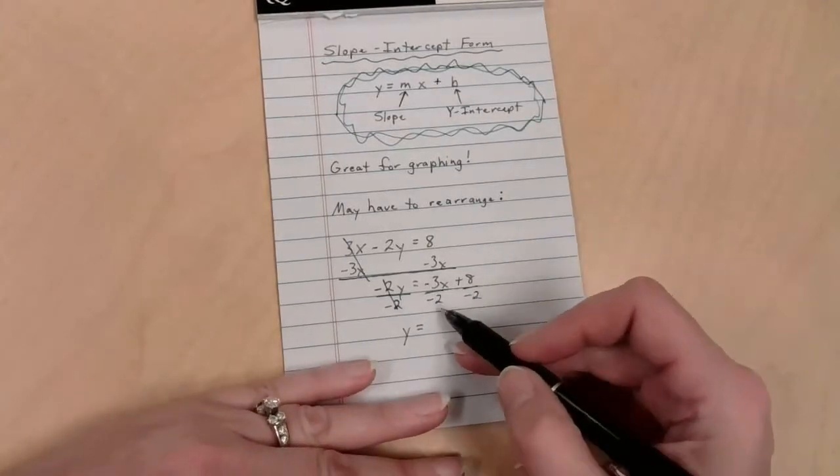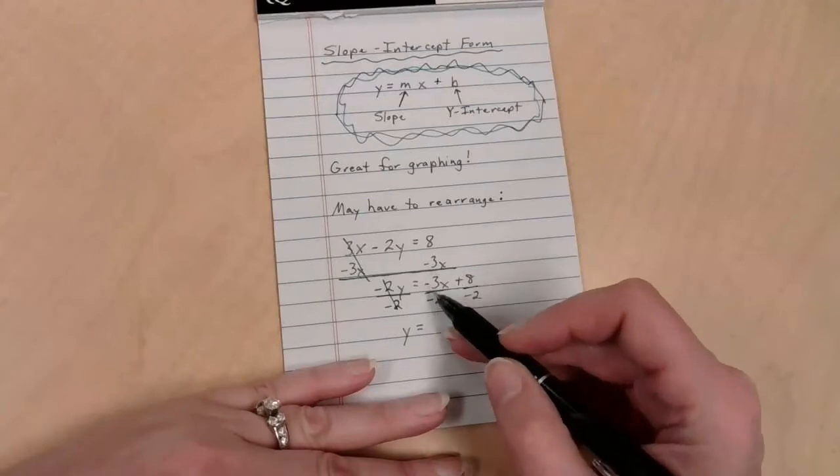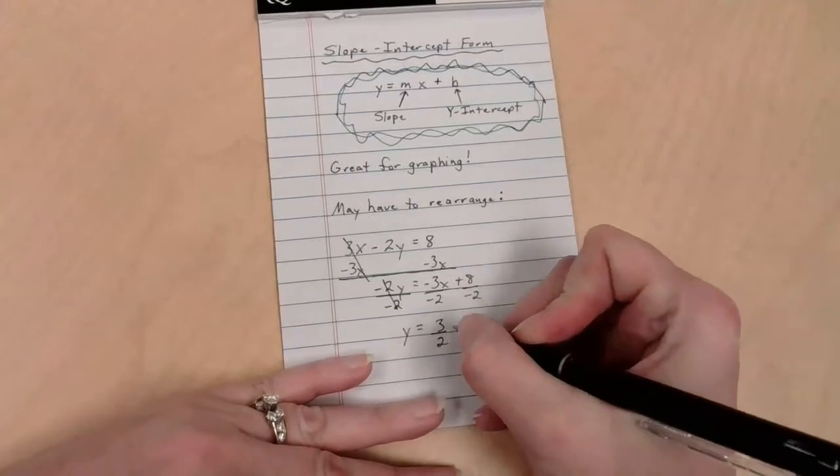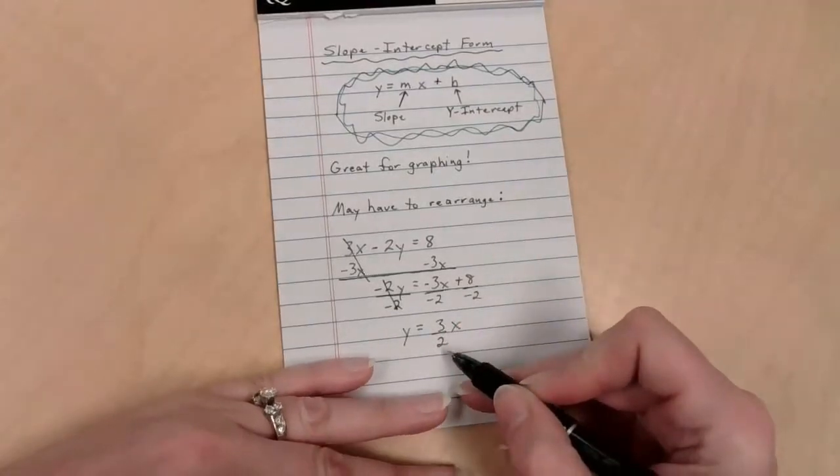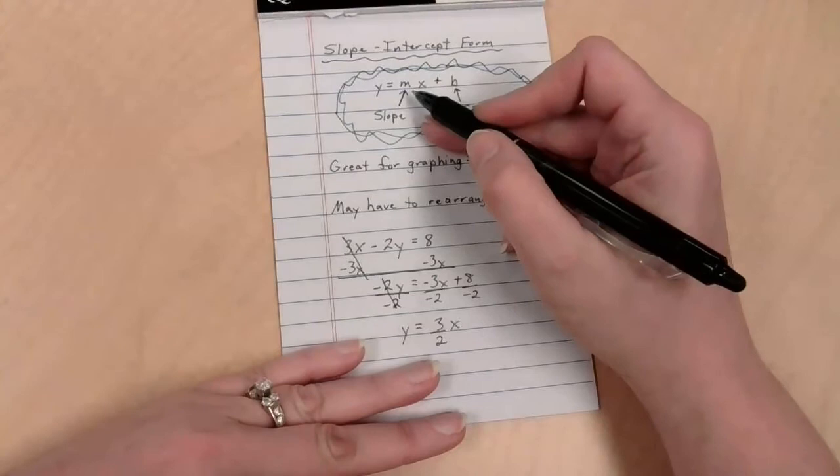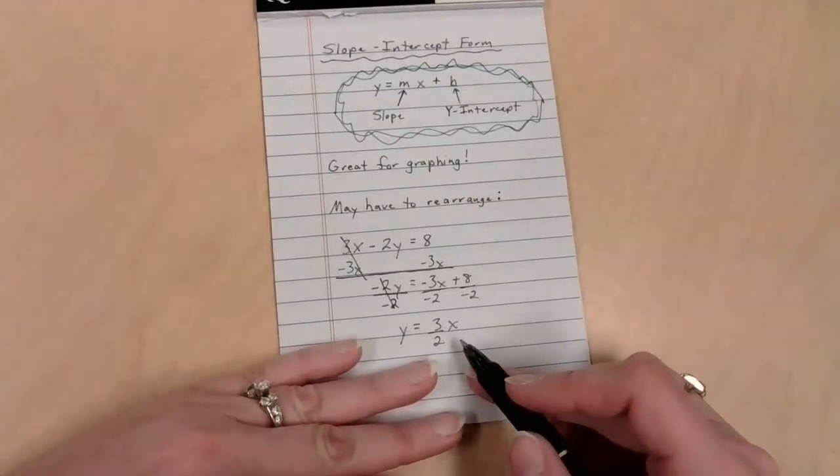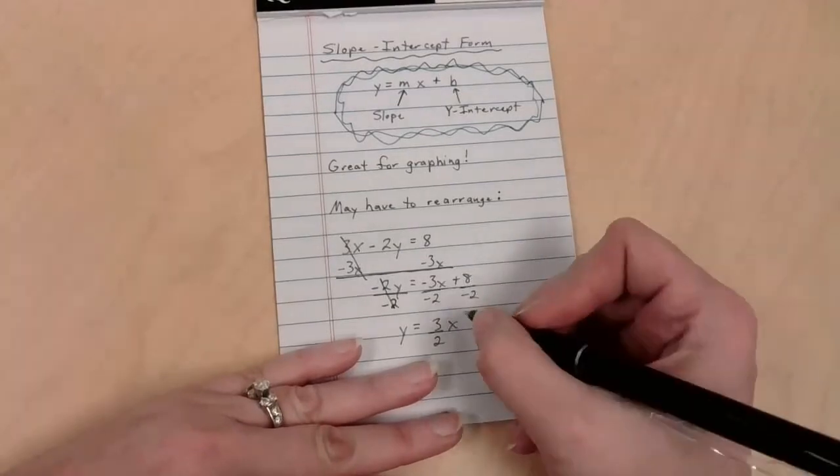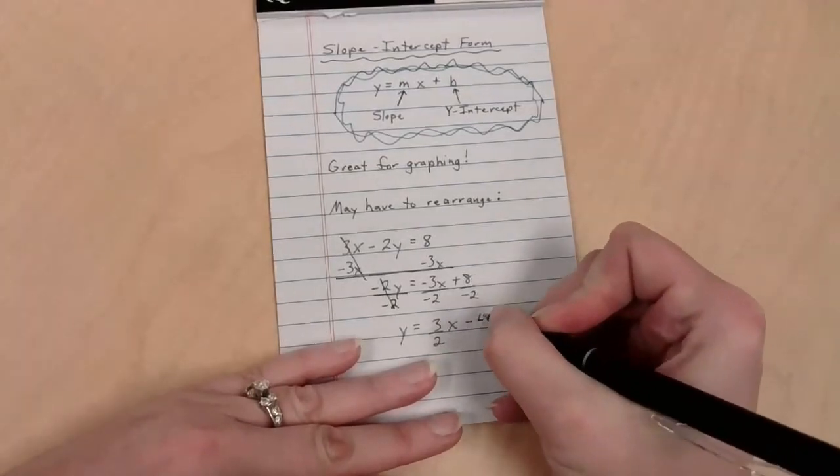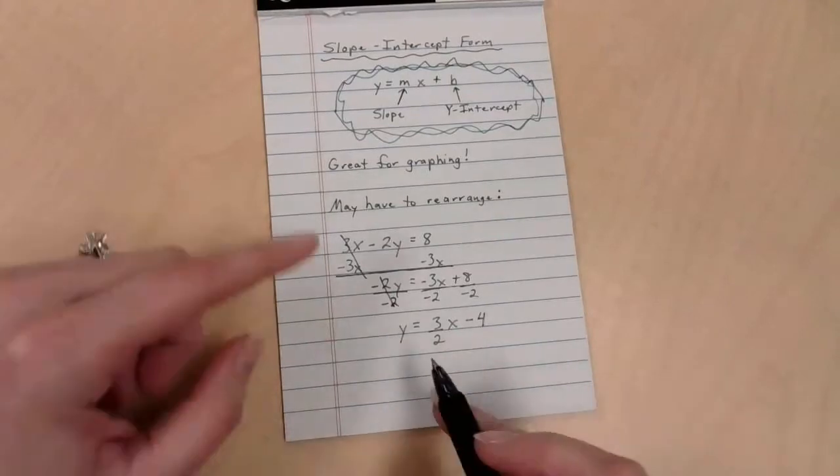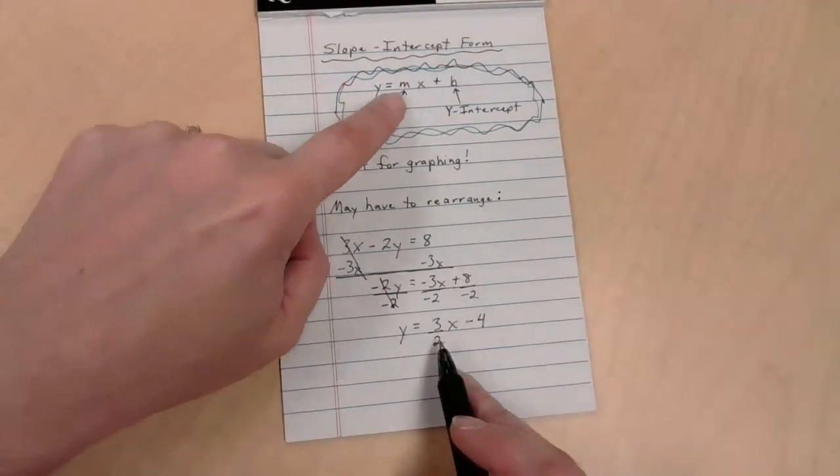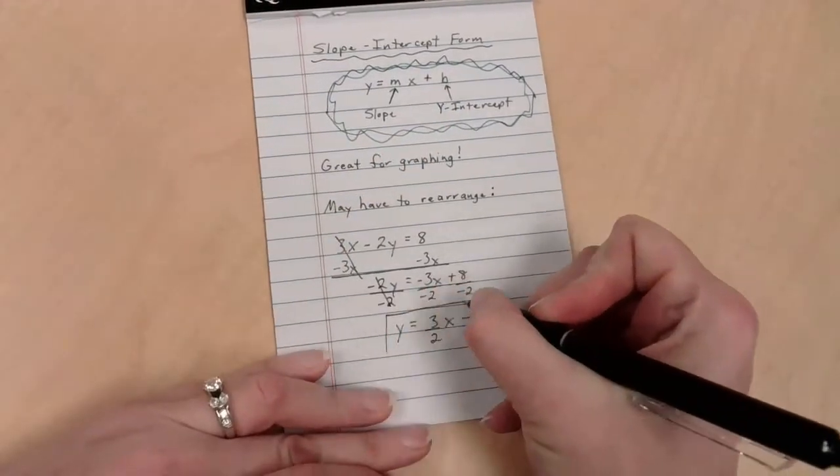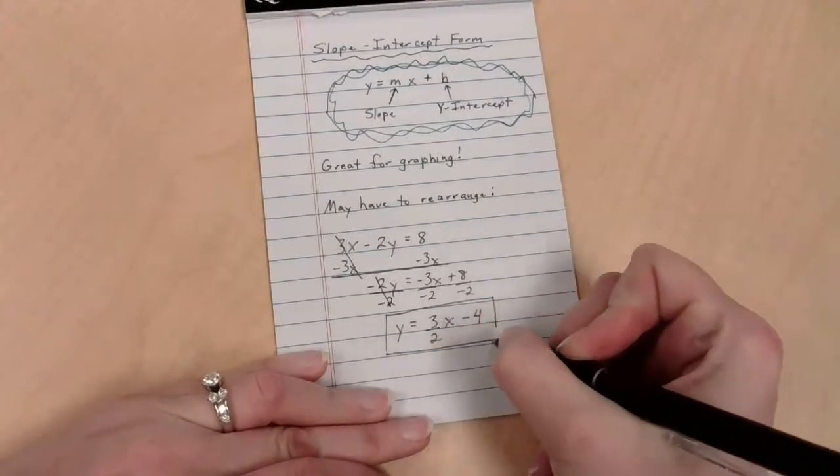I'm going to say we're going to divide this by negative 2, and we're going to divide this by negative 2. What is negative 3 over negative 2? Negative divided by negative is positive. What's 3 over 2? It's 3 over 2. Why do I like to leave it as 3 over 2? Because that's my slope. What is a positive 8 divided by a negative 2? Negative 4. My y is by itself. Ladies and gents, this equation is now in slope-intercept form.